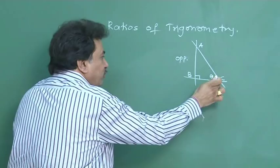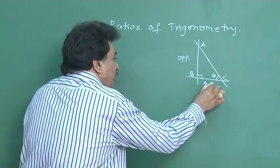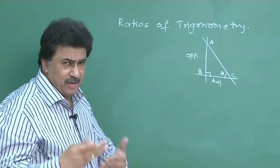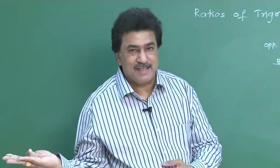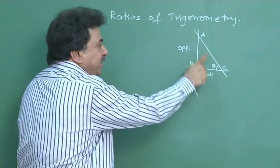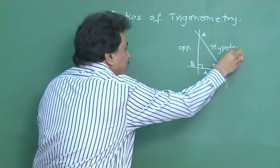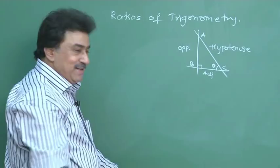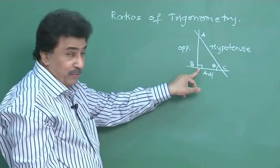AB is the opposite side of angle C theta. If AB is opposite, what about BC? BC will become the adjacent side to angle C or angle theta. Same thing: AB becomes the opposite side and BC becomes the adjacent side. What about AC? It is nothing but the hypotenuse — or in short, hypo. That's opposite to angle B, which is 90 degrees. The hypotenuse cannot change because the right angle is only one here; the side opposite 90 degrees is always the hypotenuse.